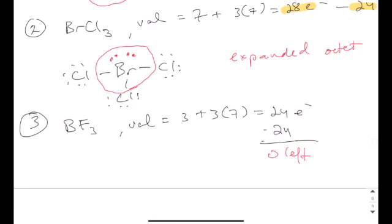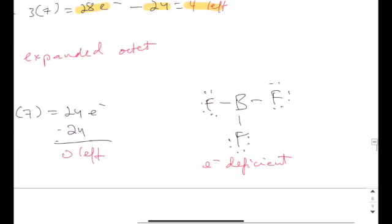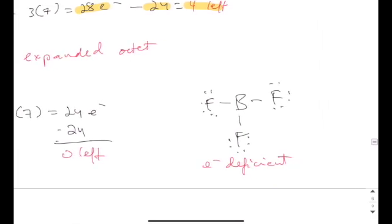Valence calculation shows you have 24 electrons and the skeletal structure would be just boron bonded to the three fluorines. Again, establishing octet for all the terminal atoms, all the fluorines, and ended up using all the electrons that we have. So zero electrons is left. So now your boron only has six electrons.